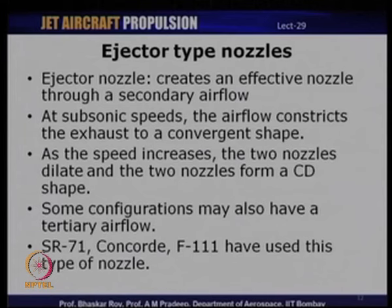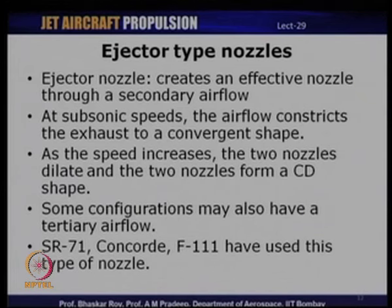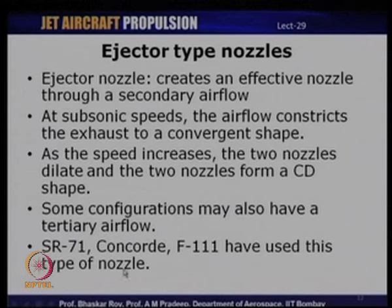The ejector nozzle is slightly more complicated — it creates an effective nozzle through a secondary airflow and can be used in subsonic as well as supersonic speeds. At subsonic speeds the airflow constricts the exhaust to a convergent nozzle, and as speed increases the nozzle dilates to give a shape similar to a CD nozzle. Some aircraft which have actually used ejector nozzles are the SR-71 Blackbird, the Concorde — the only transport aircraft which could fly at supersonic Mach numbers — and the F-111.